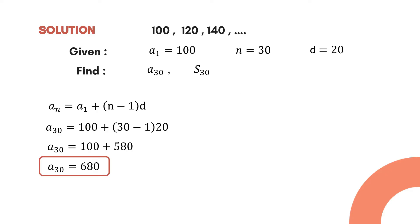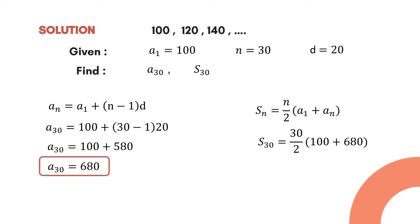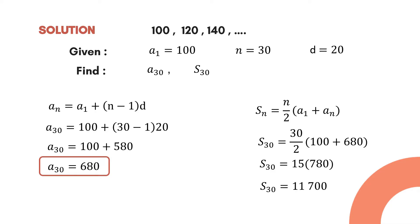Now let's solve for S₃₀ using the arithmetic series formula. Substituting the values: S₃₀ = 30/2 × (100 + 680). Simplify: 30/2 = 15, and 100 + 680 = 780. The last step is to multiply 15 by 780. Therefore S₃₀ = 11,700.